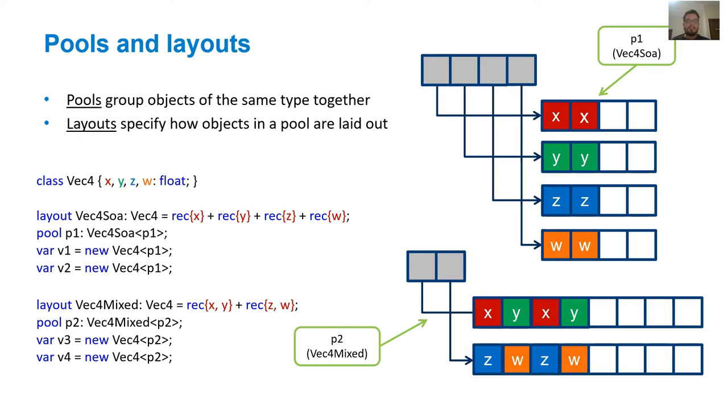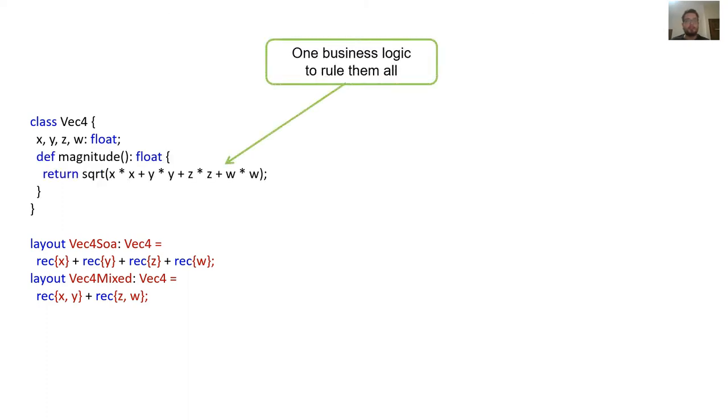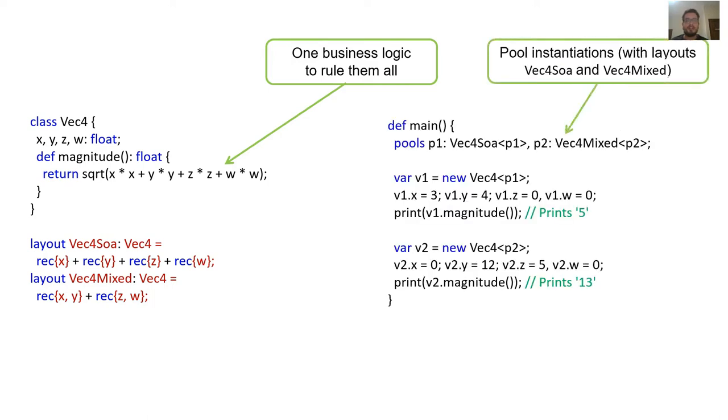We said that Shapes allows our business logic to be completely oblivious to the layout being used, so let's go and do exactly that. We'll define a method inside Vect4 that calculates the vector's magnitude. Now, let's go and create two pools with different layouts and objects inside these pools. As you can see, calling magnitude on both objects is no different than the conventional method call in a typical object-oriented language.